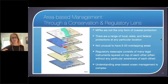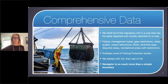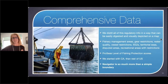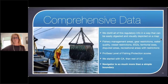The challenge is that often there's not any particular awareness of these other regulations. We're trying to tackle that with this Navigator tool, because understanding ocean-based management can be very complex. We distill all of the regulatory information in a way that can be easily digested and visually depicted on a map — things like fishery management areas, EEZs, recreational areas with restrictions. We assign a protected seas level of fishing protection score, starting with California and then completing the rest of the U.S., a process that took three years.